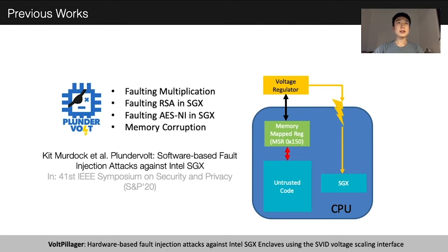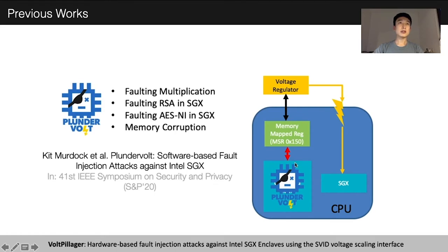Inside the CPU there is a portion of code in the untrusted region, and we also have a secure enclave which is SGX. In PlantVolt, they found a memory-mapped register, MSR 0x150, which allows you to control the voltage of the CPU. So they could run their attack code in the untrusted environment and write to this register to change the CPU voltage.